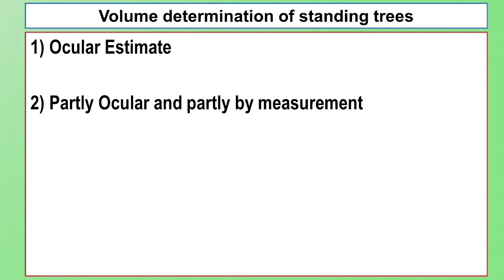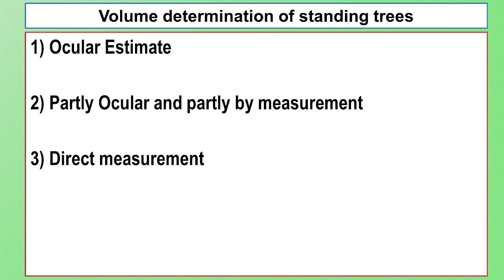Then, if you want to use direct measurement, you can use the diameter and height to measure and the different height to manually measure. If you want to use direct measurement, you can use time to use the diameter. Then, you can use indirect measurement.